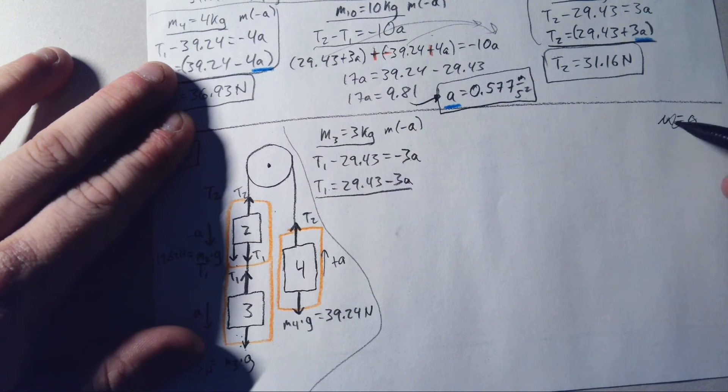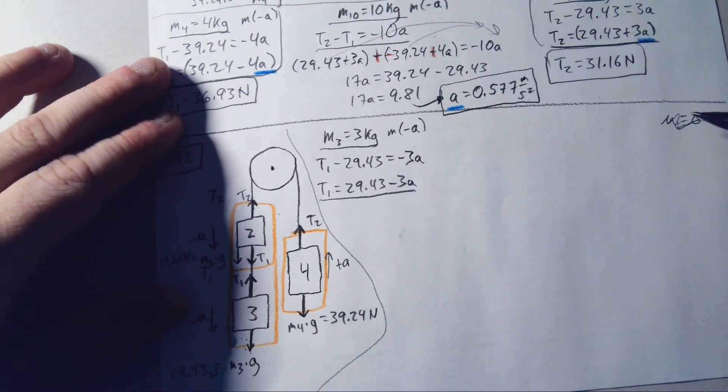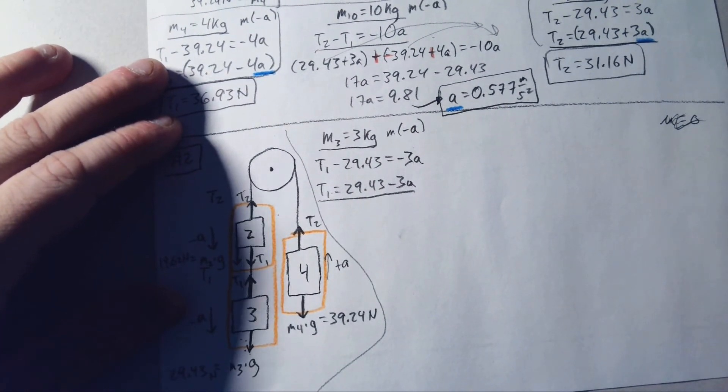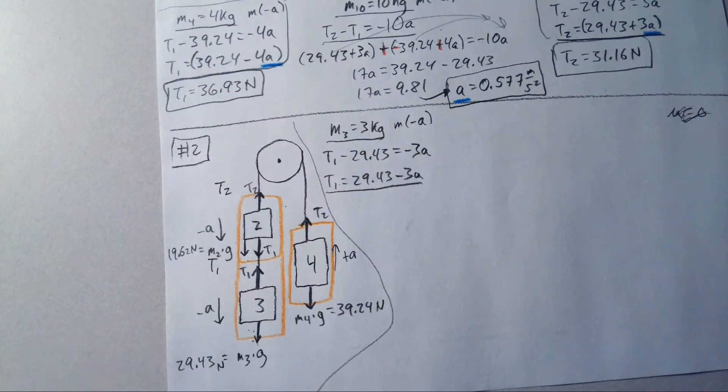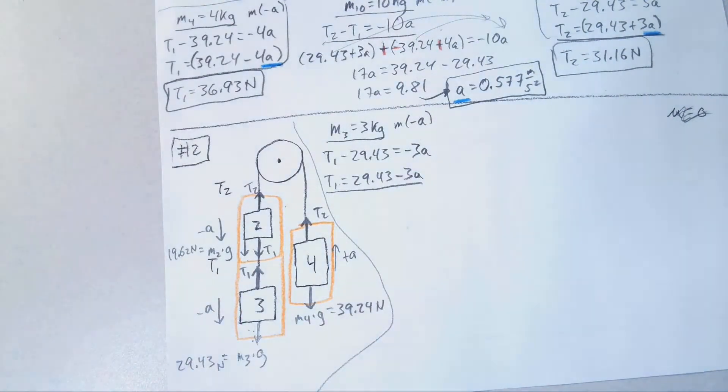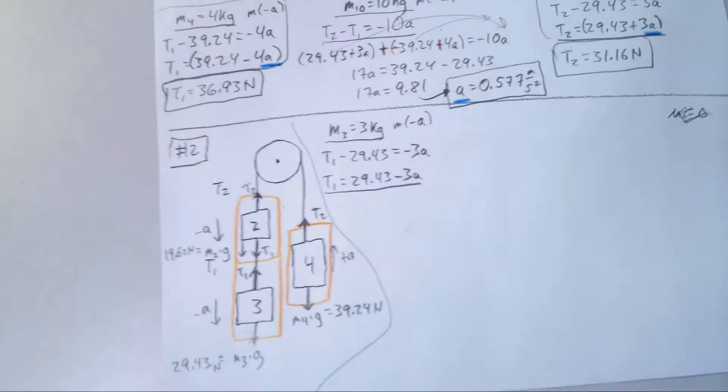Next we're going to write the 2 kilogram one here. Let me get up and turn the lights on real quick. There we go. Lights are on.